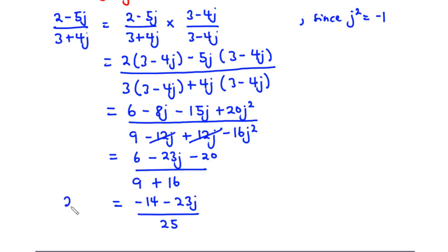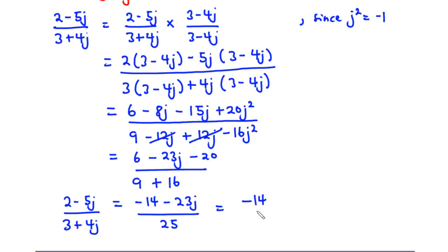Therefore, (2 - 5j) divided by (3 + 4j) equals (-14 - 23j) / 25, which we write as -14/25 minus 23j/25.